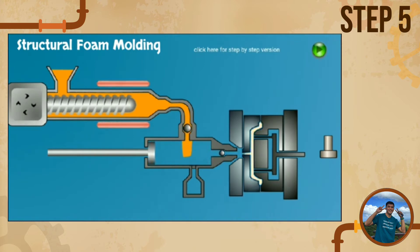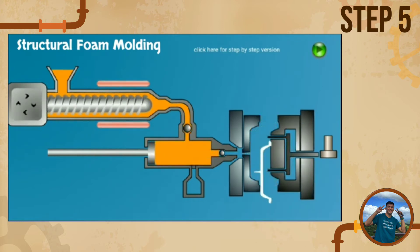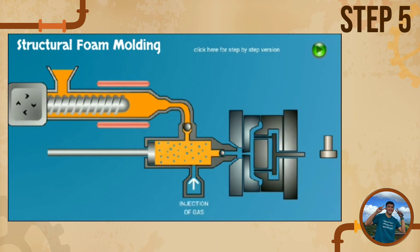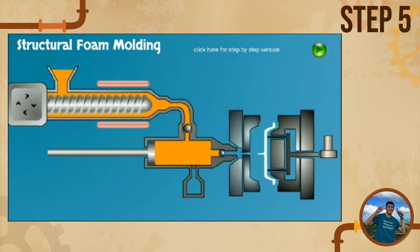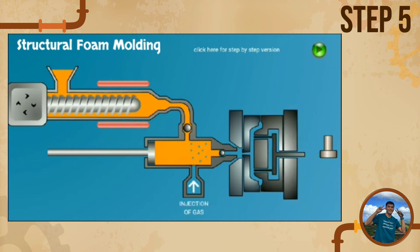On entering the molding tool, the gas in the material — now at lower atmospheric pressure — expands the melted plastic to fill the tool. When the material cools and solidifies, the tool opens and the molding ejects. The outer surface skins and the core are formed. The foamed core is thicker than normal wall sections, imparting high rigidity to the part.